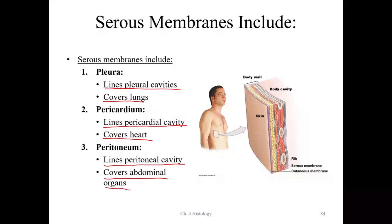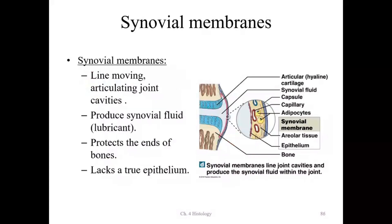The cutaneous membrane is your skin. It covers the outer surface of the body and is a thick, waterproof or water-resistant membrane that is generally dry compared to serous or mucous membranes. The synovial membrane lines articulating joints and produces synovial fluid. It does not have a true epithelium — there are gaps in the epithelial lining, so it is an interrupted lining.